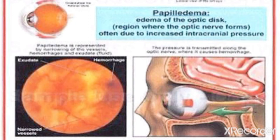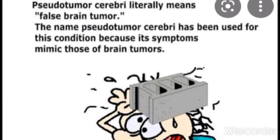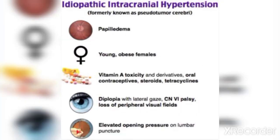The second cause is benign intracranial hypertension, also called pseudotumor cerebri. It is not a tumor but it seems like one. It is benign and idiopathic. It is common in young obese females. It can also be caused by vitamin A toxicity, oral contraceptives, steroids, or tetracyclines. In this condition, we get papilledema and also diplopia due to cranial nerve 6 palsy. The visual effects are also affected.